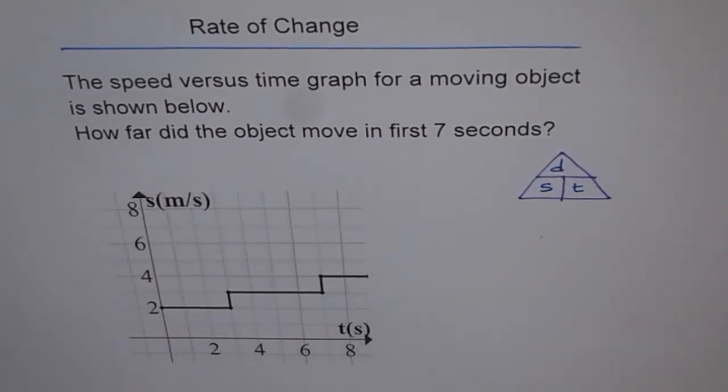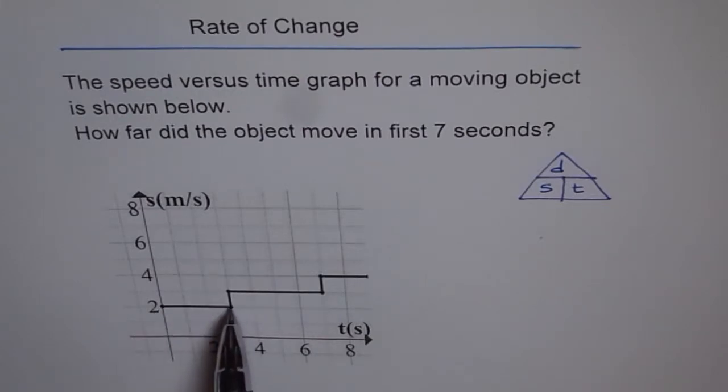So we need to find out how far the object moved in the first seven seconds. From the graph, we can see that the object is moving at a constant speed of two meters per second for a period of three seconds.